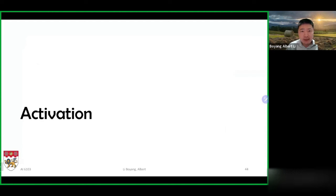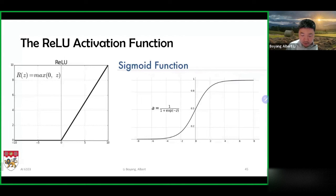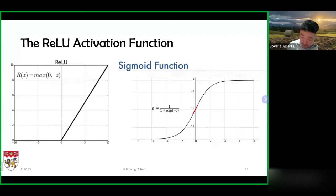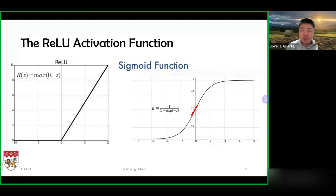The next thing we're going to talk about is the activation function. We have the ReLU activation function, the sigmoid activation function, and the hyperbolic tangent. These operations have one issue: the maximum derivative at any point is always less than one, and sometimes considerably less. For sigmoid, the maximum is only about 0.2 or 0.3. This creates a problem when we have multiple layers. When we do gradient descent and back propagation, the gradient can become quite small for the first few layers, making optimization difficult.